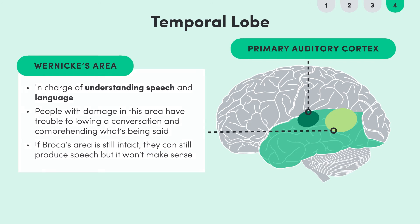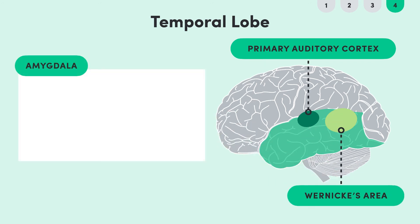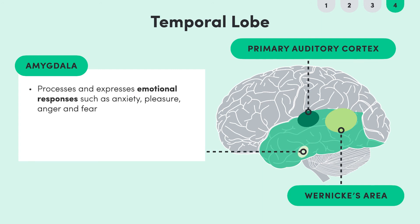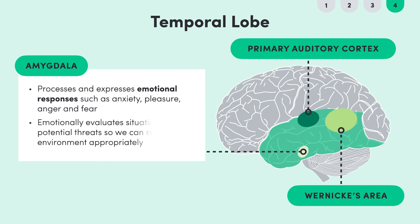Lastly, the temporal lobe contains a structure called the amygdala. It plays an important role in processing and expressing emotional responses, such as anxiety, pleasure, anger and fear. It does this through the emotional evaluation of situations and potential threats, so that we can react to our environment appropriately.